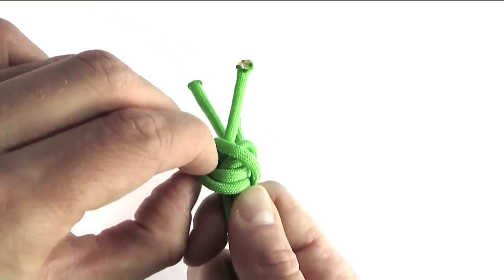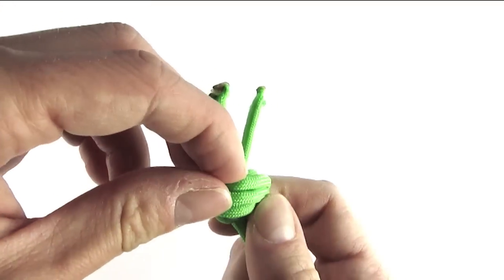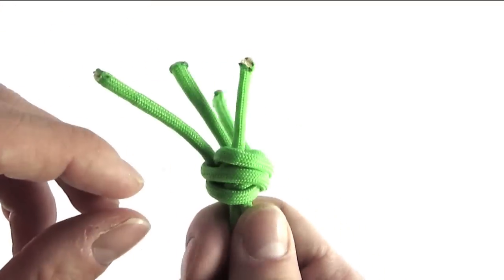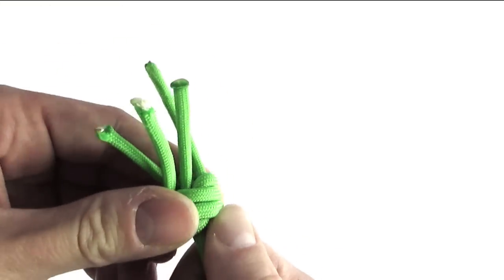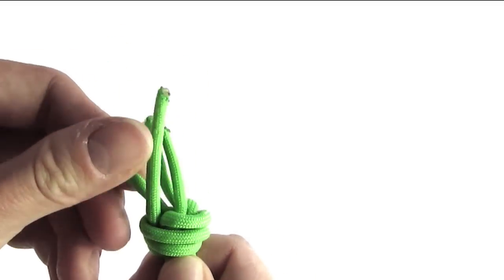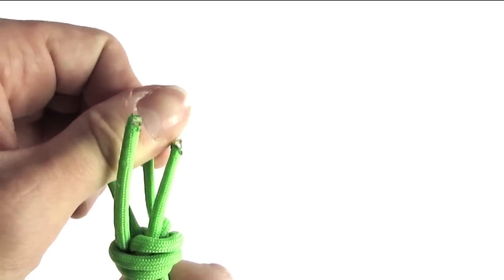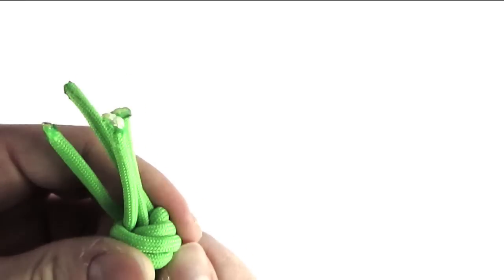We're then going to take the next cord on the left and again place it to the right. And we keep doing this until all the cords line up one next to the other. And then we're going to slowly pull on each to remove the remaining slack out of the knot.